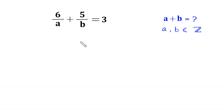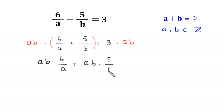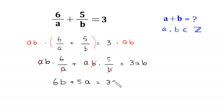Let's start by multiplying both sides by ab. The given equation is 6 over a plus 5 over b is equal to 3. We multiply both sides by ab, so ab times 6 over a plus ab times 5 over b is equal to 3ab. The a cancels with a and b cancels with b, so this equation becomes 6b plus 5a is equal to 3ab.